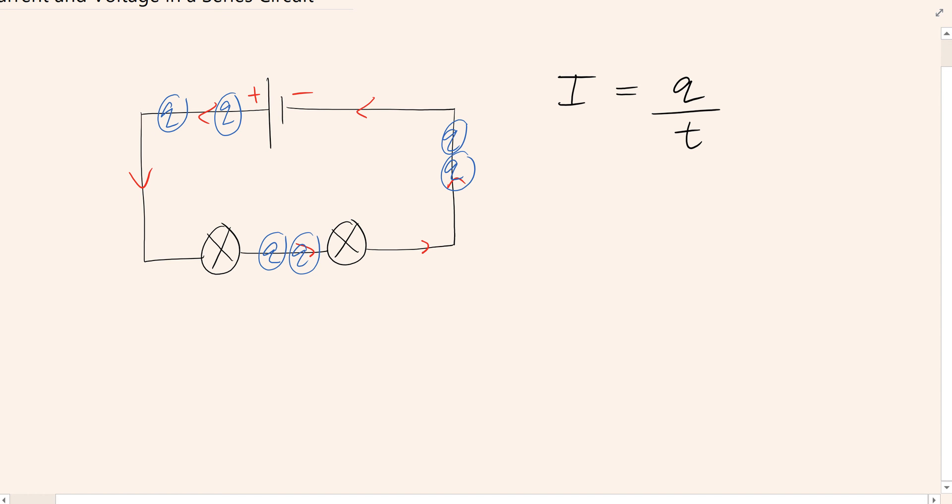If you consider the lamps as being a little bit like a traffic jam, they impede the current because they're resistors. Well, the result of the current being impeded by those resistors is that the current will end up having to reduce down to the same rate everywhere in the circuit.